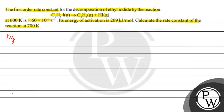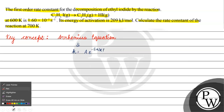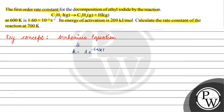The key concept for this question is the Arrhenius equation. The Arrhenius equation is basically k, that is rate constant, is equal to A times e to the power minus Ea by RT. We can write it as: ln k is equal to ln A minus Ea by RT.